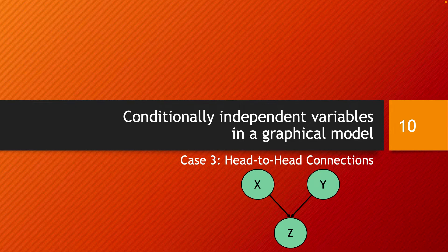We discuss in this video the third of the three canonical cases of conditionally independent variables in a graphical model: the head-to-head connections. In this model there are two parent nodes x and y with a single successor z. Having knowledge about x can be propagated to z and then backwards to y, showing that x and y are dependent through z. However, when z is known, x and y become independent, because z blocks the path between x and y, or in other words it separates them.